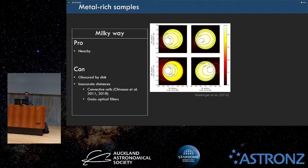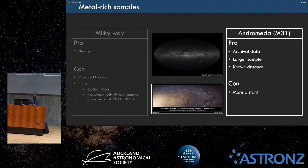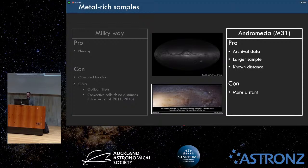With the Gaia telescope we can estimate distances using parallax, but where the peak brightness on these stars moves around, which screws the parallax measurements. Also, Gaia's filters are in the optical and the stars we're looking at are very dusty and obscured in the optical — you can only see them in the infrared. So we go to Andromeda, or M31, a nearby galaxy. We used archival data — telescopes love Andromeda, there's a large sample, and it has a known distance that's relatively uncontroversial.